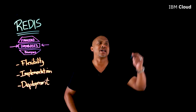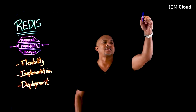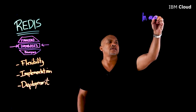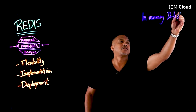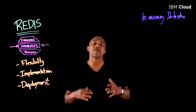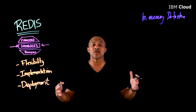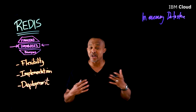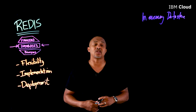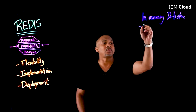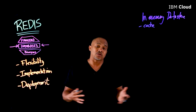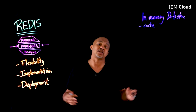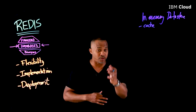One thing to keep top of mind about Redis is that it is an in-memory data store. That's to say that everything you put in sits in memory, so it has very quick and easy access to it. The role that it plays great is as a cache, and it can also function as a full-fledged data store if you would like to.